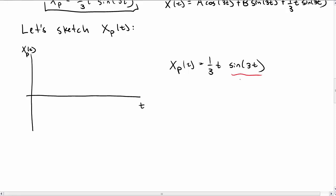But it's going to have an amplitude that grows like 1 third t. So let me mark some special points on the t-axis: pi over 3, 2 pi over 3, pi, and I can keep going. So the amplitude is going to follow this envelope.